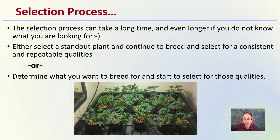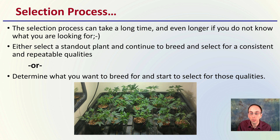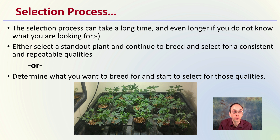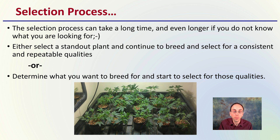The selection process can take a long time — even longer if you do not know what you're looking for. Even being very selective and targeted can still take a very long time. You have two routes: either select a standout plant and continue to breed it, selecting for consistent and repeatable qualities, or determine what you want to breed for first and then start selecting for those qualities.